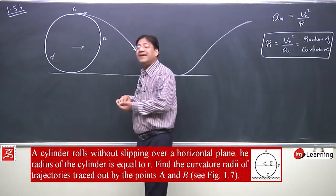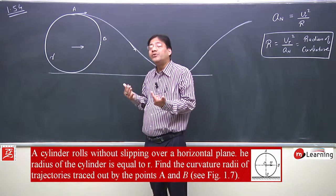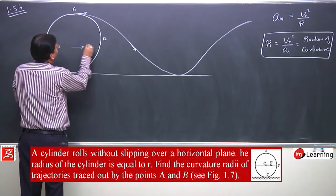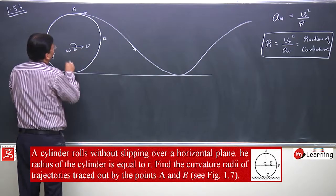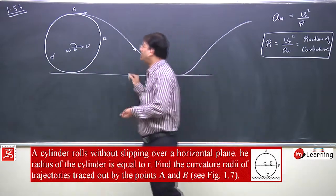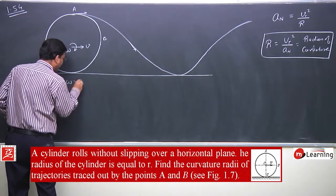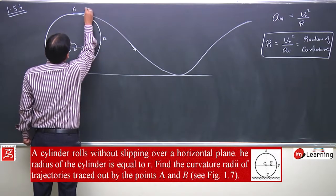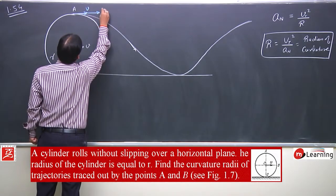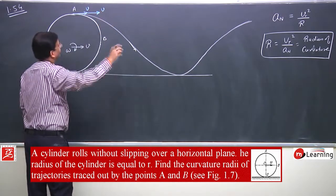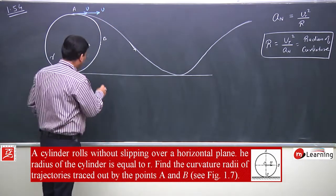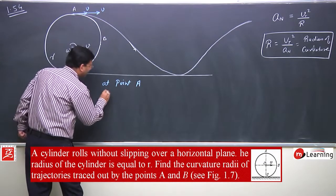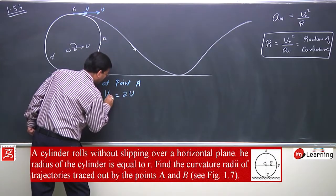First of all, consider point A — its velocity, its magnitude, and its direction. We have already seen that if this cylinder has translational velocity v and angular velocity omega, then v equals omega times r. The velocity of point A would be the sum of translational and rotational components. At point A, the tangential velocity is 2v.